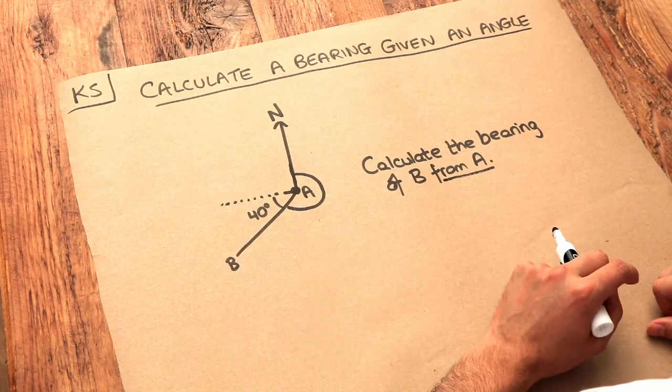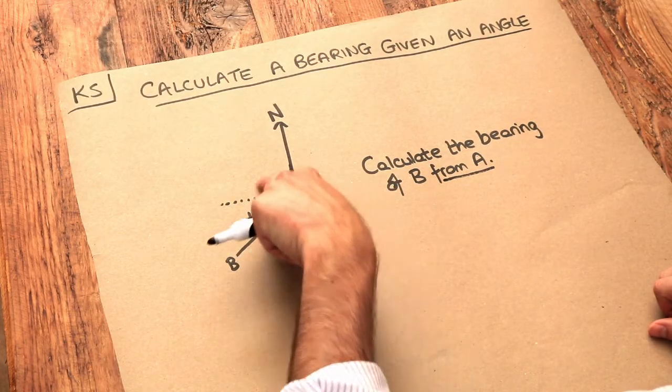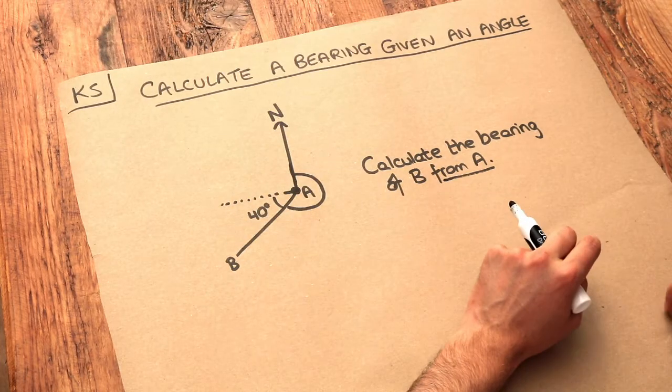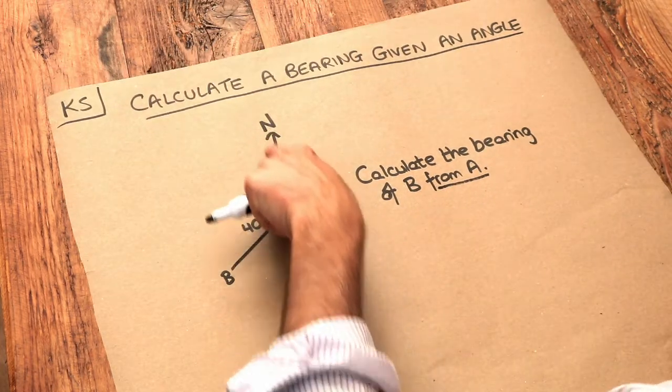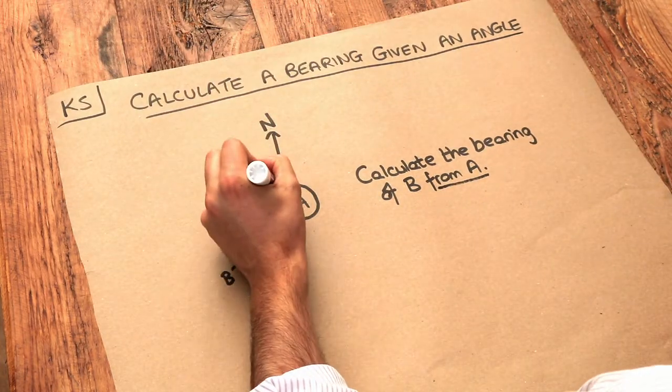At this point we can use basic angle facts. We know the total angle around a point is 360 degrees. If this is north and this is west, that's a 90-degree angle here.